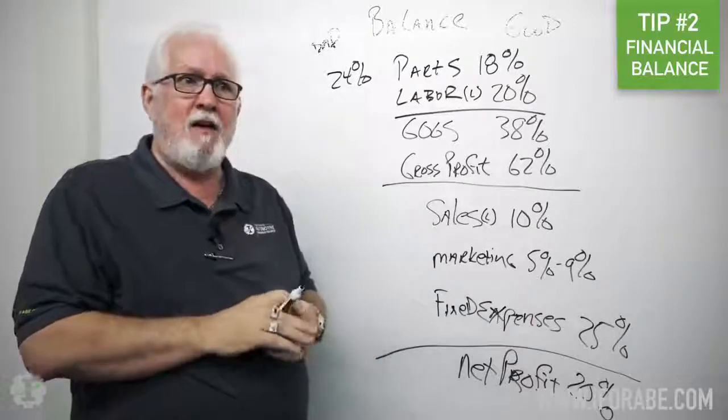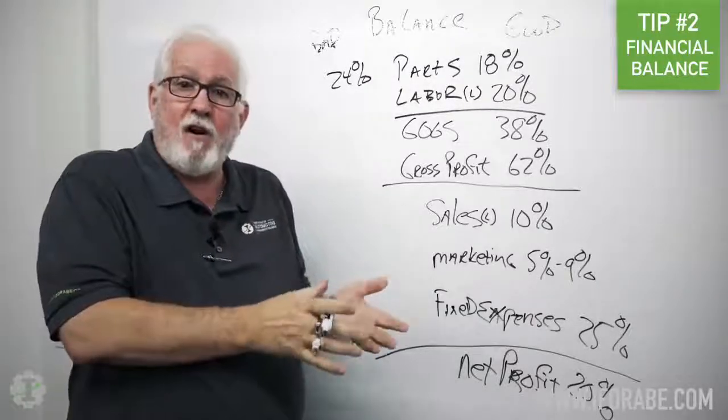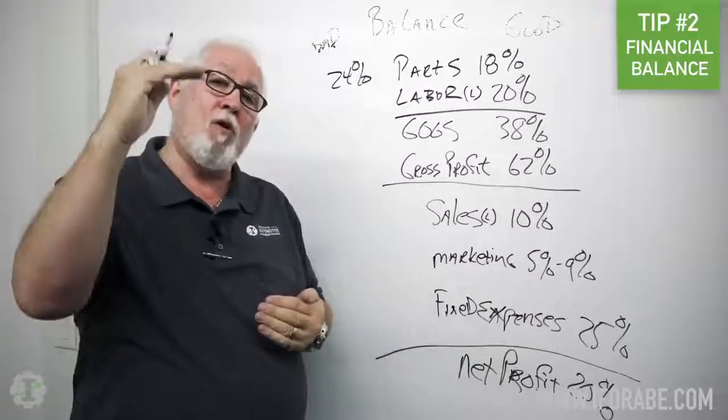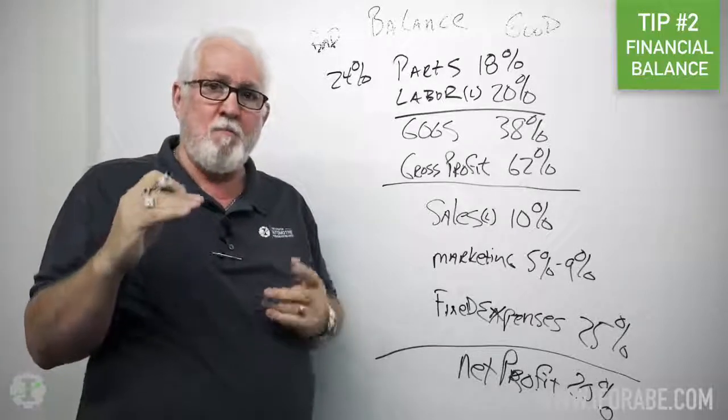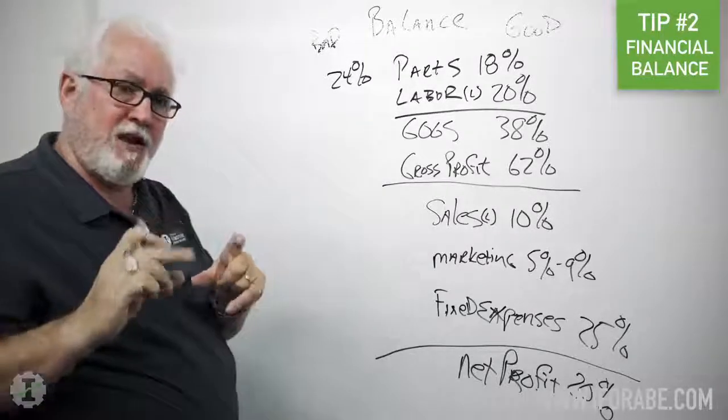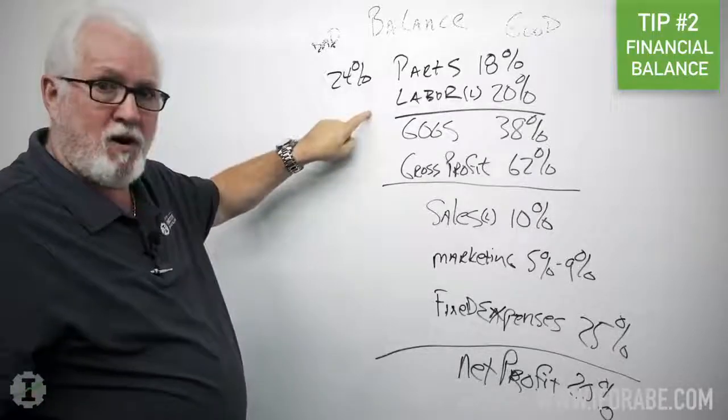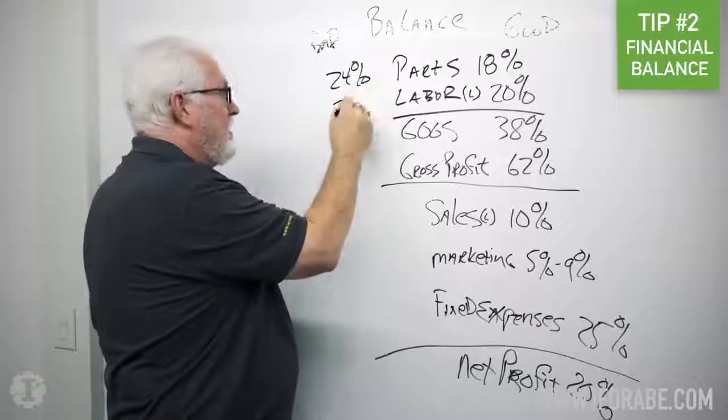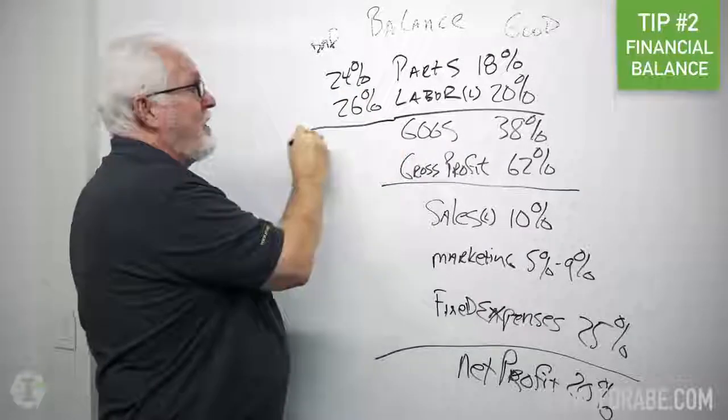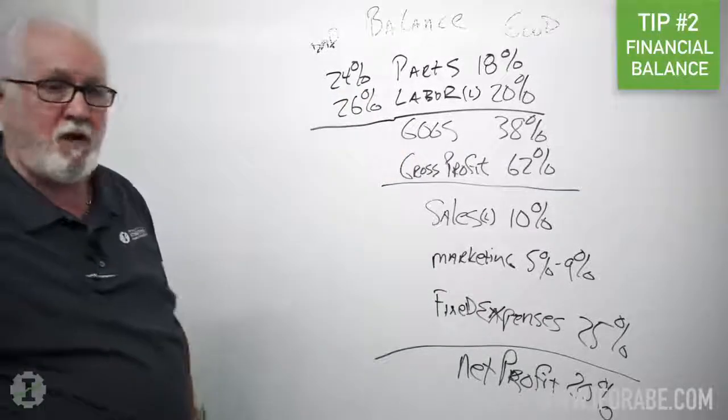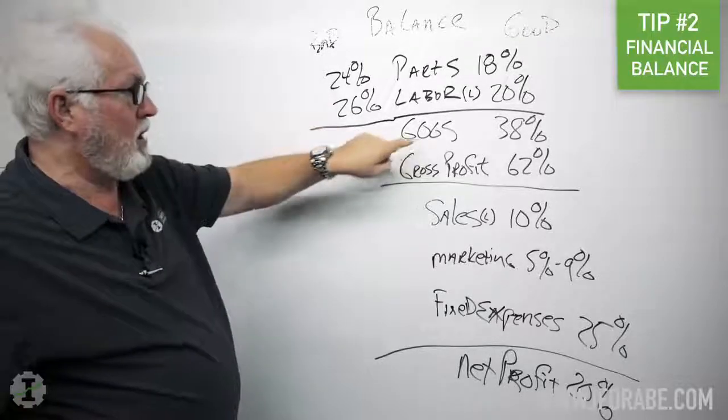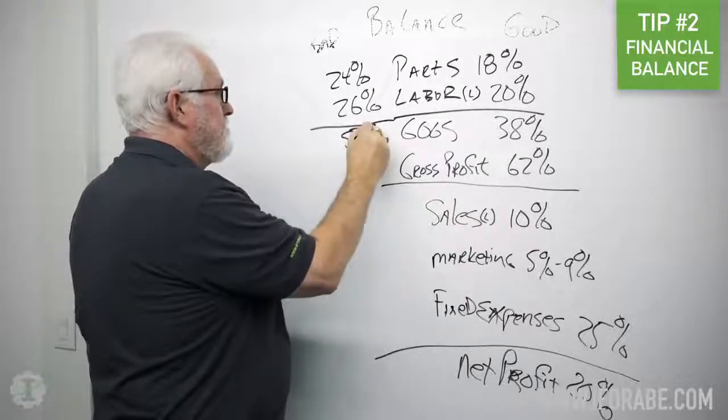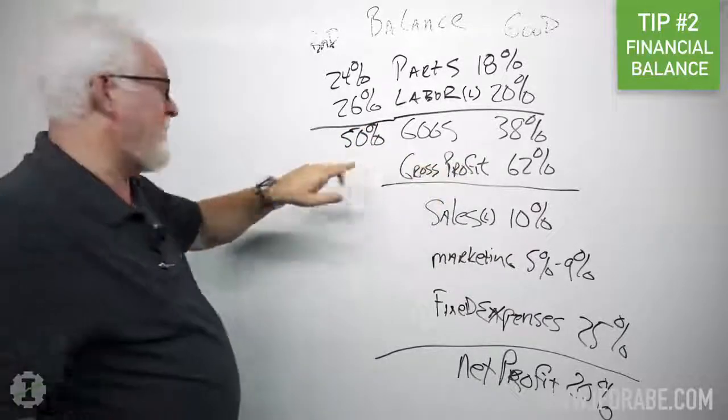And if I don't pay attention to productivity and make sure that my technicians are at 100%, or if I don't hold the line and charge for diag, so I have a technician that is gonna diag your car, he's gonna spend three hours on your car but I'm only gonna charge you an hour, that will lower my effective labor rate considerably, making the cost that I pay that technician higher than 20%. And that cost can go up to 26%, 27%, whatever, based on the fact that we didn't charge what we were supposed to charge.